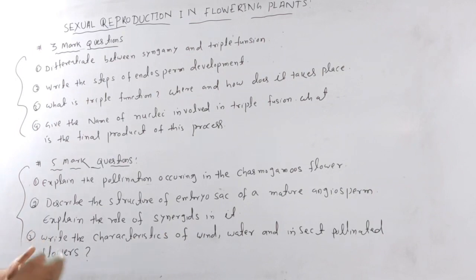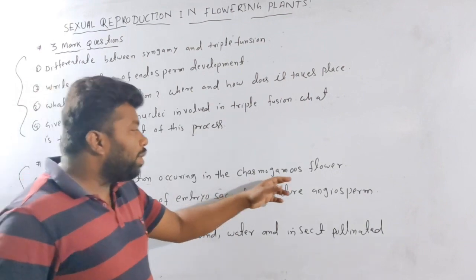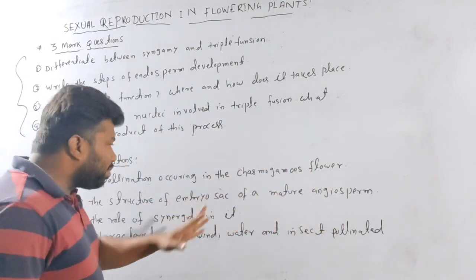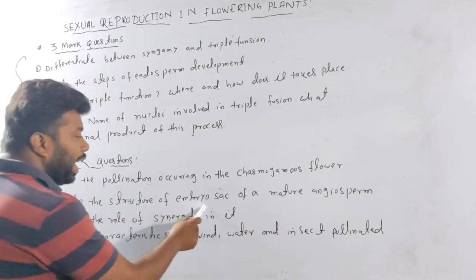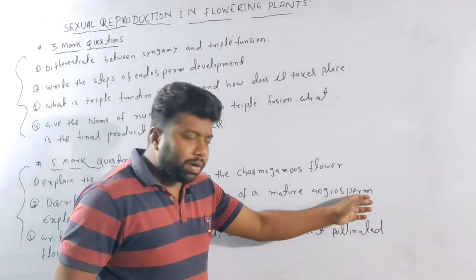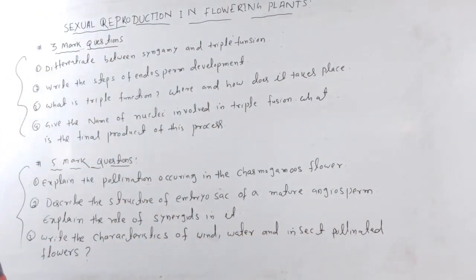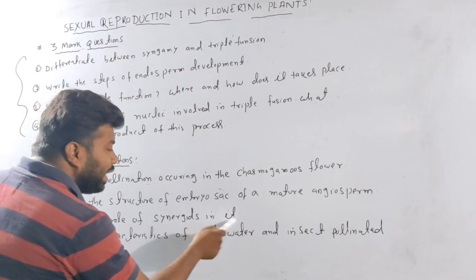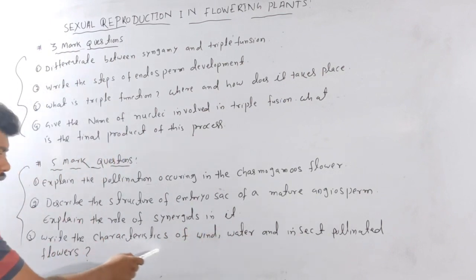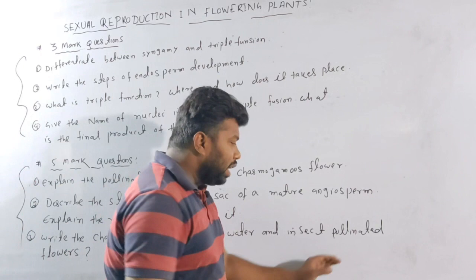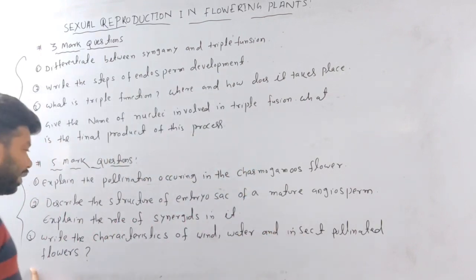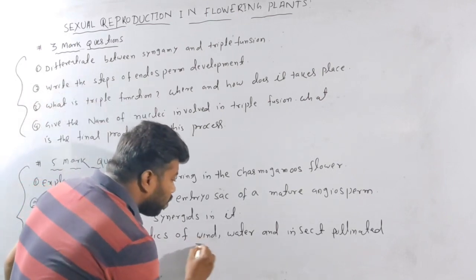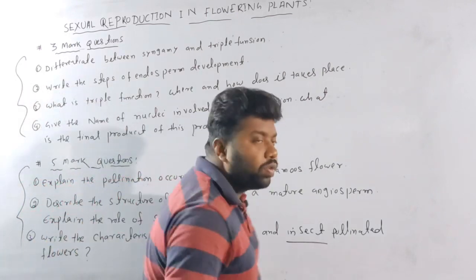For the 5-mark questions: explain how pollination occurs in a cleistogamous flower. Explain the structure of the embryo sac of a mature angiosperm and explain the role of synergids in it. Write the characteristics of wind-pollinated, water-pollinated, and insect-pollinated flowers.